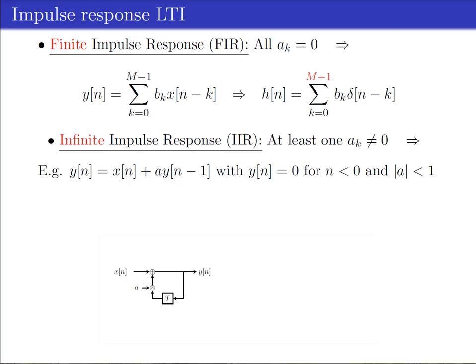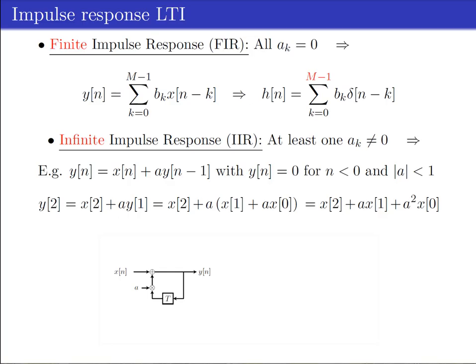We can rewrite the difference equation by evaluating it step by step. For n is 0, the output y0 is x0, because yn is 0 for all indices n smaller than 0. For n is 1, we can substitute the previous output value y0 is x0, and y1 is equal to the sum x1 plus a times x0. Using this result for n is 2 gives the sum of three previous input signal samples: x2 plus a times x1 plus a squared times x0.